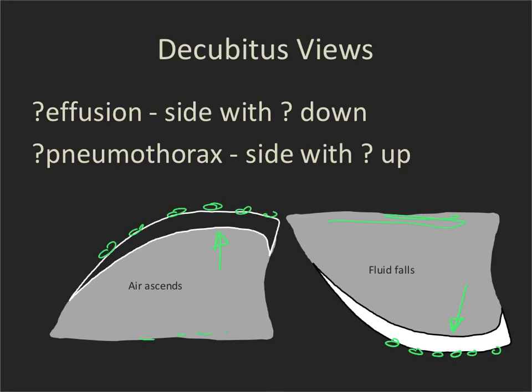So if we're wondering if the patient has a left-sided effusion, we will do a left lateral decubitus x-ray. If we're wondering if the patient has a right-sided pneumothorax, we're also going to do a left lateral decubitus x-ray.